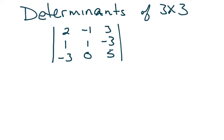Here is the procedure for finding the determinant of a 3x3 matrix. The first thing you do is take your first two columns — remember, columns go up and down — and rewrite them to the right of the problem. So here I'm going to make another column that's 2, 1, negative 3, and next to that I'm going to include the column negative 1, 1, and 0.